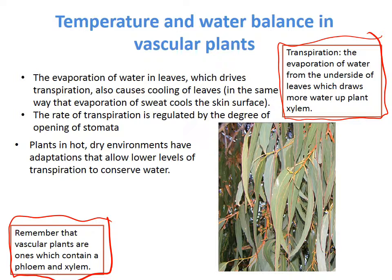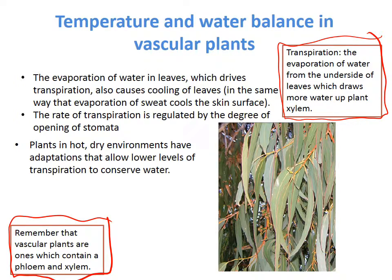Plants in hot and dry environments have adaptations that allow lower levels of transpiration to conserve water. The drawing up of water through the plant xylem is more efficient, so they don't rely too much on transpiration because they need to save water, living in environments where rain is less common.